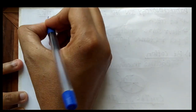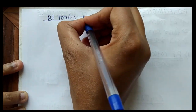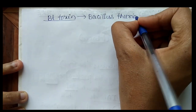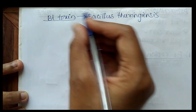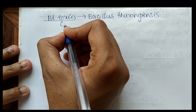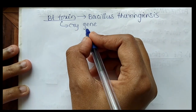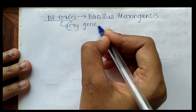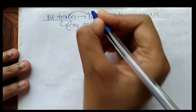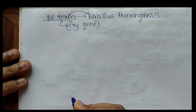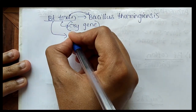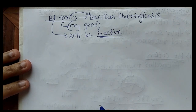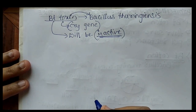BT toxin is produced in Bacillus thuringiensis by the cry gene. This toxin will not harm the bacteria because the toxin is in an inactive state inside Bacillus thuringiensis.